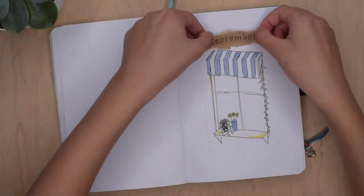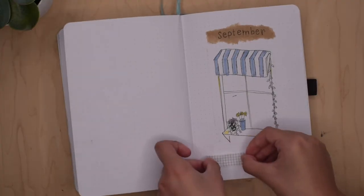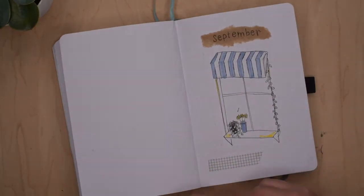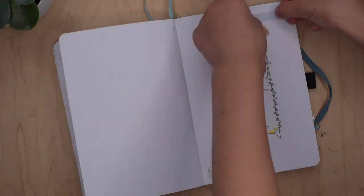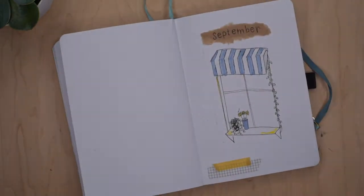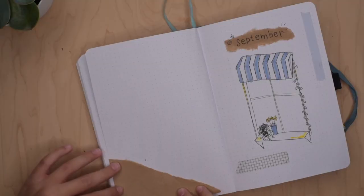For the header for September, I decided to go for a typewriter font because a lot of the signs I see in cafes are really simple, so that's the font I went for.